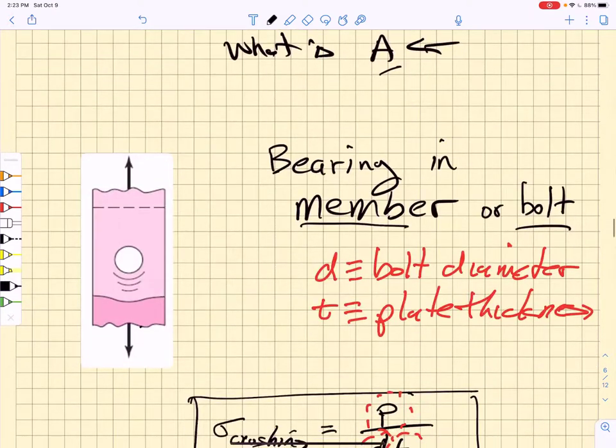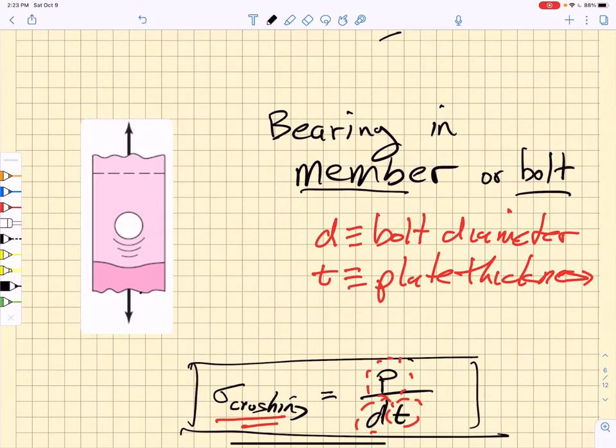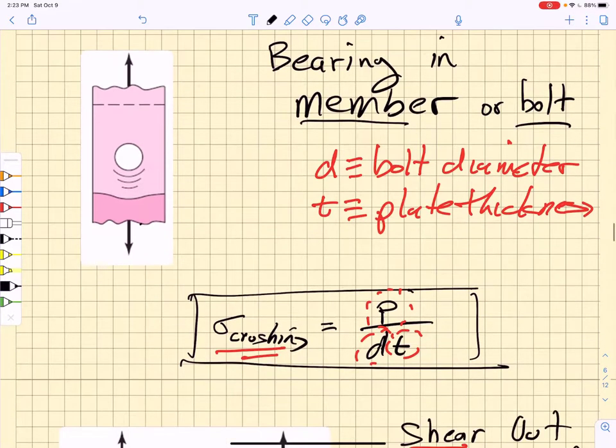The other failure criterion that we care about is bearing in the member or the bolt, and we're going to use the bolt diameter to calculate that bearing stress. And this bearing stress, sometimes I think of it as a crushing stress, but I'm going to go ahead and replace that with the word bearing. All we do is we take the load per bolt, that's P, and we divide it by the projected cross-sectional area of the bolt, that is D, times the thickness of the plate.